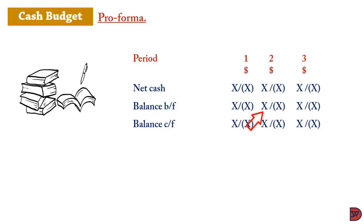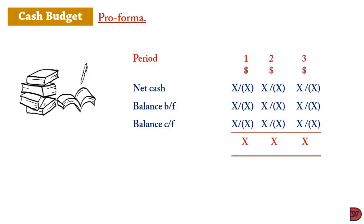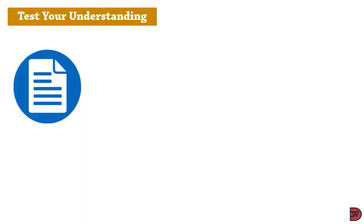The balance carried forward for period one moves as the balance brought forward for period two. The balance carried forward for period two moves as the balance brought forward for period three. So the balance for period three becomes the opening balance for the subsequent year. This gives you the total cash available for the period. Let's test our understanding.